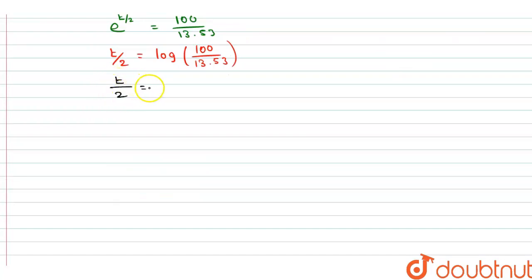Therefore, t by 2 is equal to log of 100 divided by 13.53. Therefore, t by 2 is equal to log of 100 minus log of 13.53. So, if you find the values of this and this,